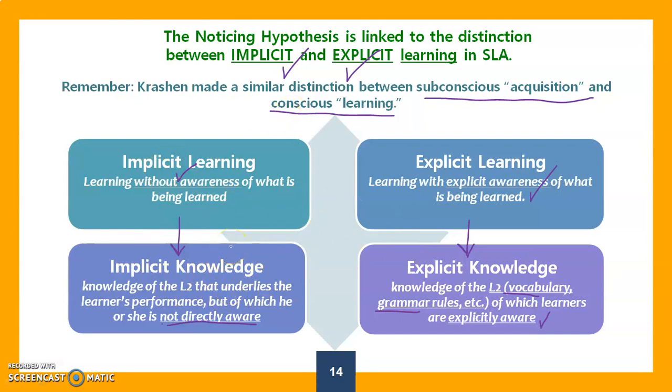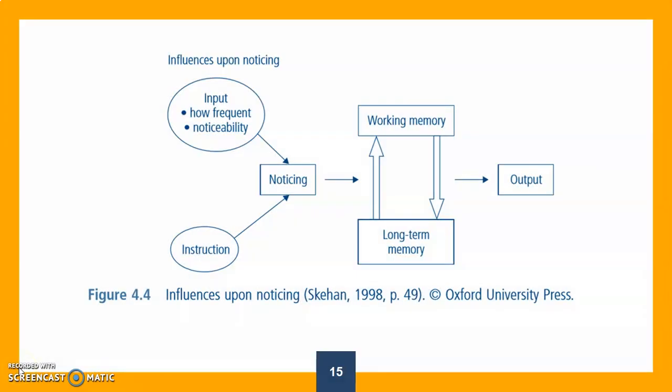This is the model proposed by Schmidt. We have input happening and instruction at the same time. The student has to do some noticing. If the student notices the linguistic features, they will move to working memory. By these arrows we mean practicing and rehearsal, which gets us to long-term memory. During this practice or rehearsal, output should be happening - producing the language.